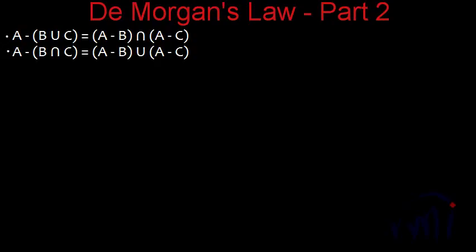Hi, in this video we are doing the second part of De Morgan's law, meaning we are going to discuss the third and the fourth De Morgan's law. The third one says A minus B union C is equal to A minus B intersection A minus C. We are going to prove these laws using Venn diagrams, and in the next video I am planning to prove them using the written method.